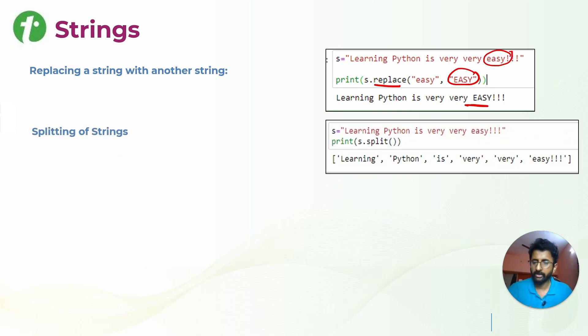If you wanted to split the string and do certain operations, you can use dot split function. Split function will be splitting the strings into the list which will be comma separated. We will be seeing list in next chapters. Whenever you are doing s dot split, it will split the string into the comma separated list.